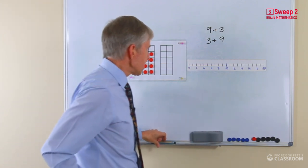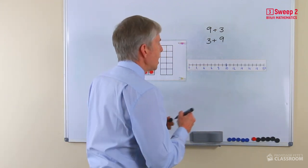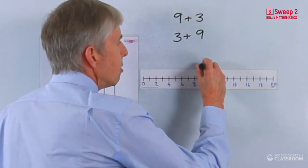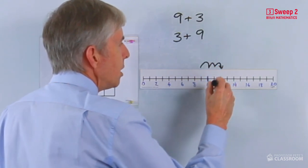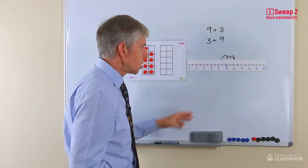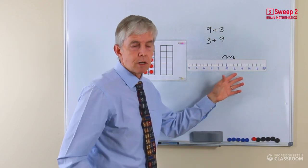So let's look at the number line. We're starting at nine, and we're counting on three. So we're going one, two, three, what will the number be that we get to? So if we do that, we can see the answer straight away.